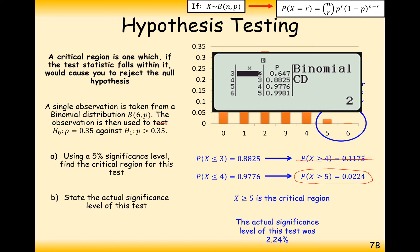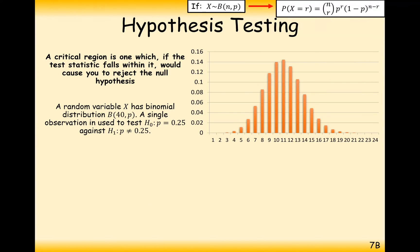The key part here is to understand that when the alternative hypothesis is a probability greater than 0.35, you're looking at the top end of the graph. If the probability were less than 0.35, you'd look at the lower end. Now we're going to look at a two-tailed critical region — I can identify this because the alternative hypothesis is P is not equal to 0.25. We've got a binomial distribution with 40 trials, and the null hypothesis is P equals 0.25 against the alternative hypothesis P not equal to 0.25.